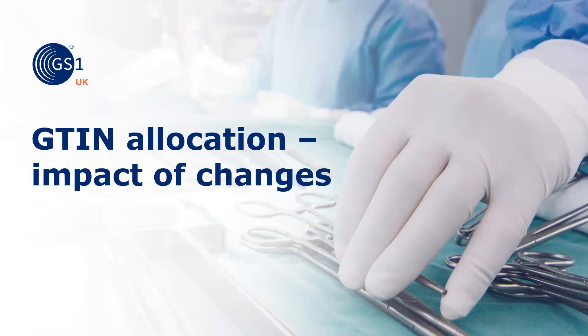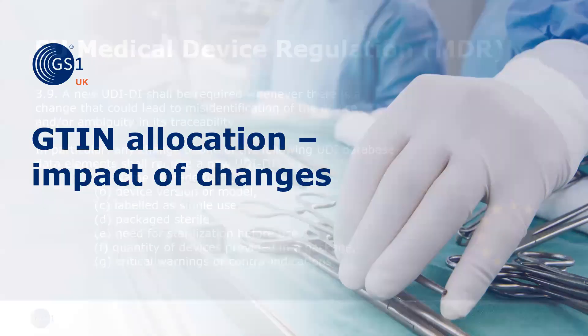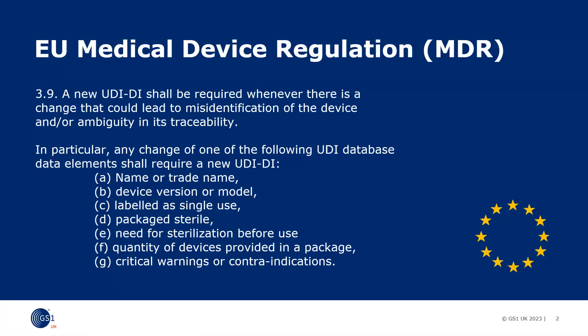This module provides guidance on what changes may impact the GTIN allocation of a product. The EU Medical Device Regulations state that a new UDI-DI shall be required whenever there is a change that could lead to missing identification of the device and or ambiguity in its traceability. It references several data elements that, when changed, require a new UDI-DI.